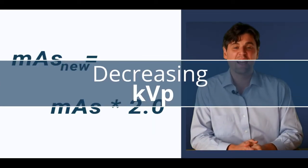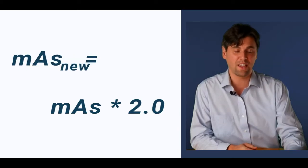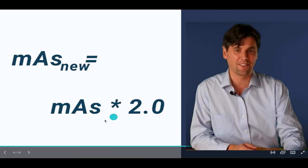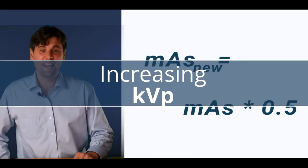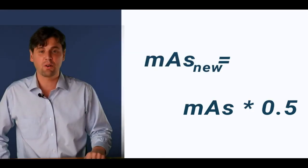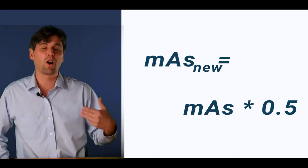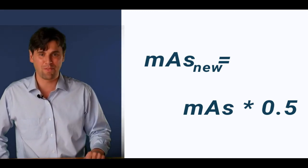If your KVP is decreased by 15%, you're going to want to take your MAS and you're going to want to multiply it by a factor of 2. Your KVP is increased by 15%, so from 100 to 115. You're going to want to take your MAS and you're going to want to divide it by 2 or multiply by 0.5.